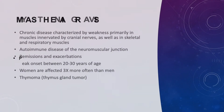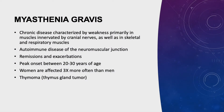Similar to GBS, but with a completely different outcome, is myasthenia gravis. Myasthenia gravis is a chronic disease characterized by weakness primarily in muscles innervated by cranial nerves, as well as in skeletal and respiratory muscles. It is progressive paresis of affected muscle groups that is partially resolved by resting. The most common symptoms are involvement of eye muscles, such as ocular palsy, ptosis, diplopia, and weak or incomplete eye closure.